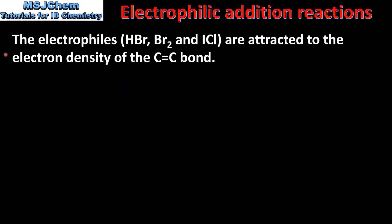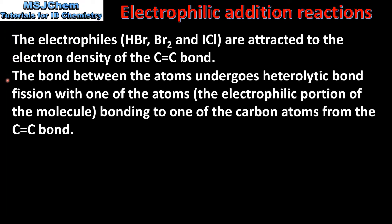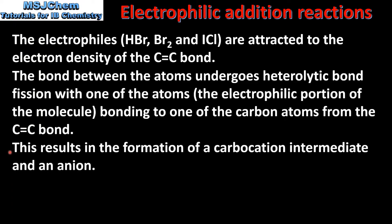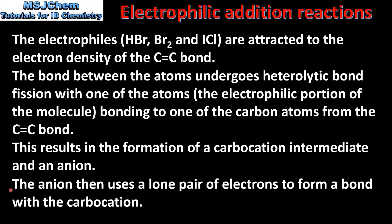Let's end with a summary. In each of the mechanisms that we looked at, the electrophiles are attracted to the electron density of the carbon-to-carbon double bond. The bond between the atoms in the electrophiles undergoes heterolytic bond fission, with one of the atoms — known as the electrophilic portion of the molecule — bonding to one of the carbon atoms from the carbon-to-carbon double bond. This results in the formation of a carbocation intermediate and an anion. The anion then uses a lone pair of electrons to form a bond with the carbocation, which results in the formation of the product.